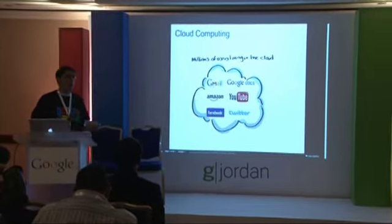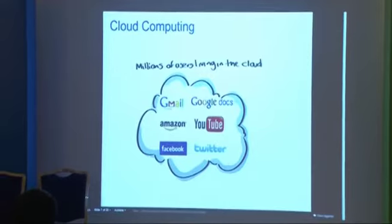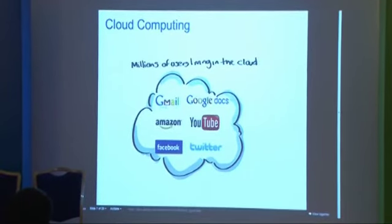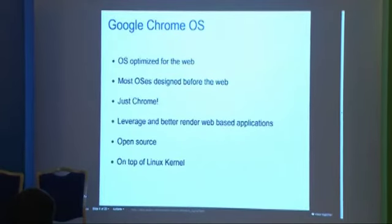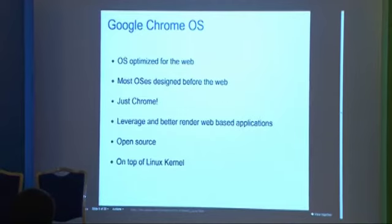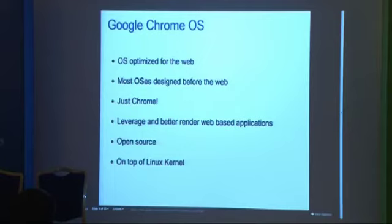So we're thinking: if all people are using cloud computing, they're going to spend a lot of time on the Internet. We decided to build an operating system that is optimized for the web. We took a Linux kernel and took out a lot of the stuff you don't need, like daemons and drivers you don't use. Then we basically put Chrome on top of it. Now the OS is only about Chrome.